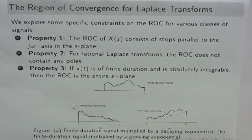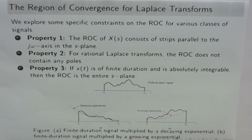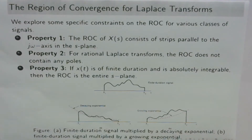Let us explore some of the key properties of the region of convergence. The region of convergence is often a contrasting feature — as previously mentioned, two different signals can have the same algebraic expression in the S-domain but differ in terms of their region of convergence. Let us explore the properties and constraints on the ROC for various classes of signals.